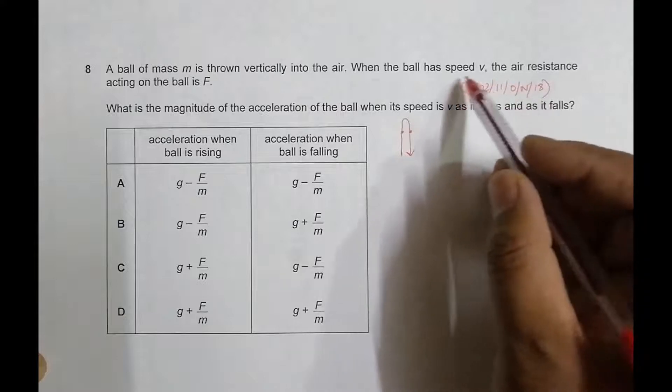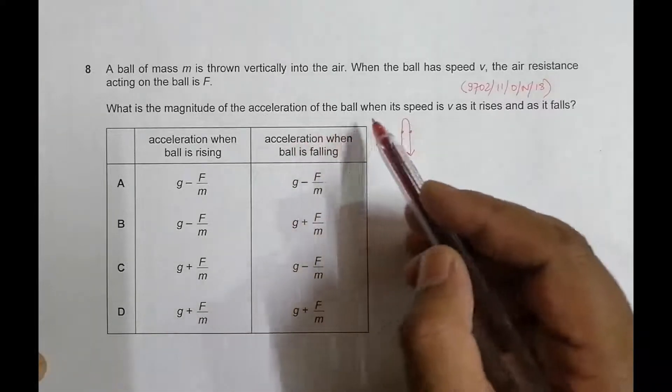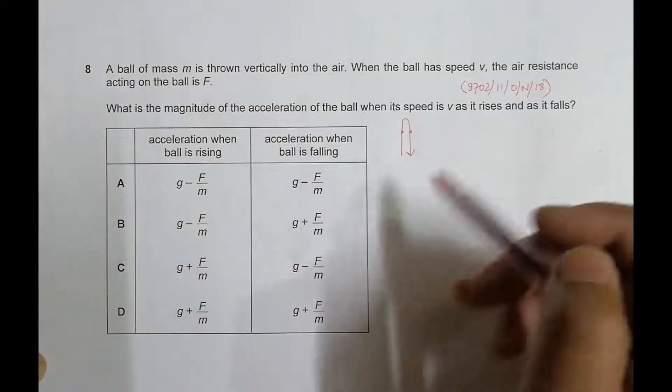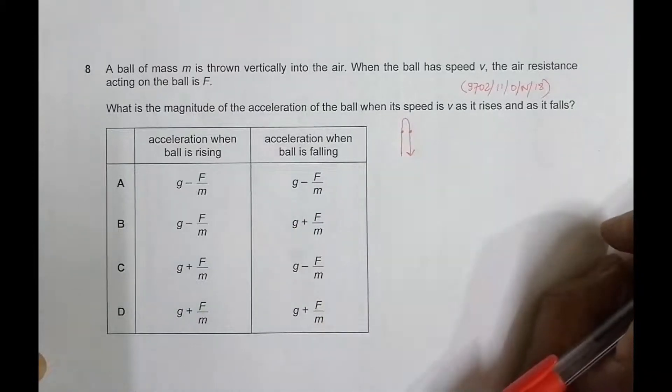So when it is at the speed v, the air resistance acting on the ball is F. So what is the magnitude and direction of the acceleration of the ball when its speed is v as it rises and falls? So we have to find its acceleration on the two occasions when it rises and when it falls.